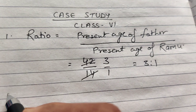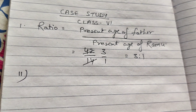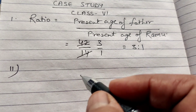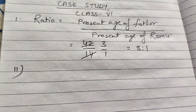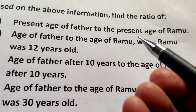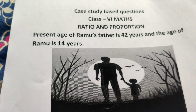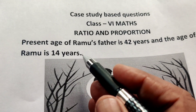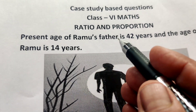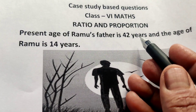The second question is: find the ratio of the age of father to the age of Ramu when Ramu was 12 years old. The present age of Ramu is 14, so when Ramu was 12, that is 2 years less. So 14 minus 2 is 12, and the father becomes 42 minus 2.